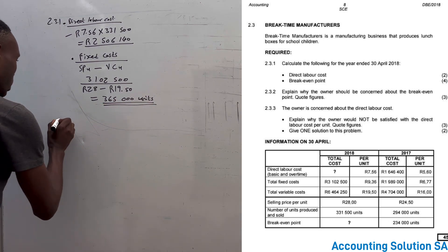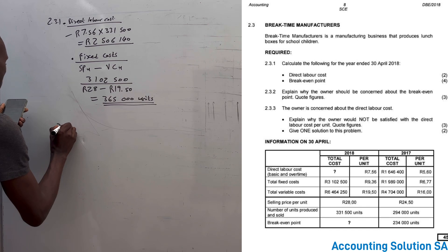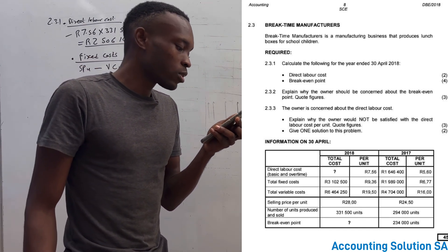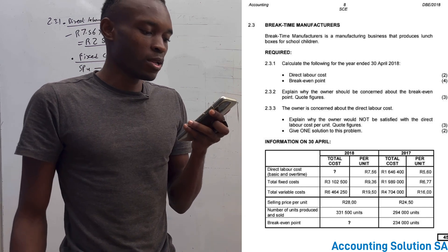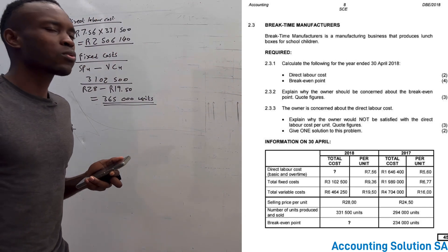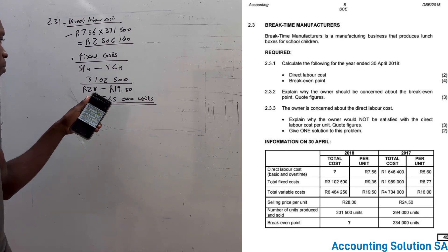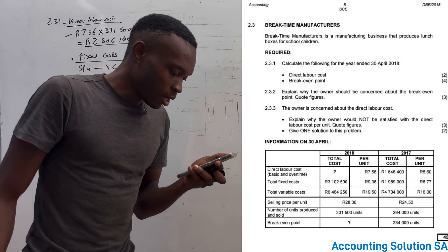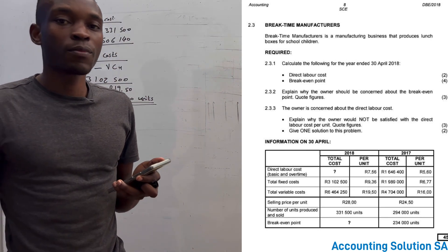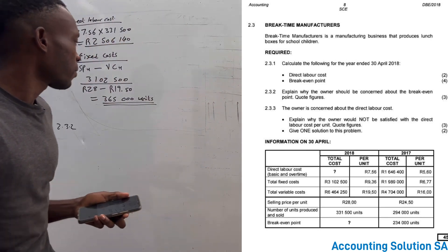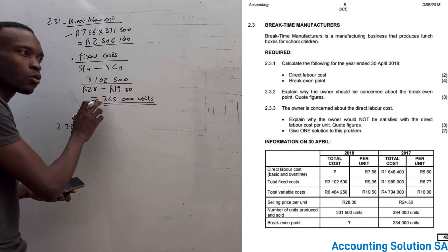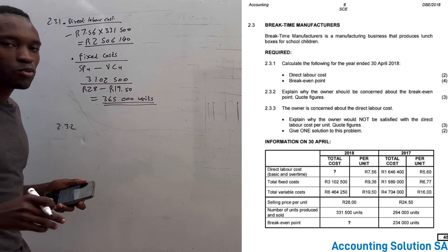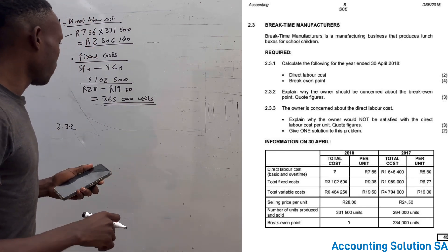Question 2.3.2 asks: explain why the owner should be concerned about the break-even point, and quote the figures. The break-even point is 365,000 units — this is the point where there is no profit and no loss. The business must produce and sell more than this number in order to make a profit.